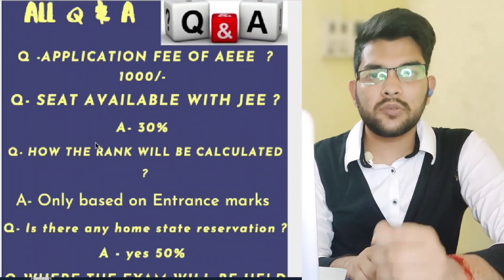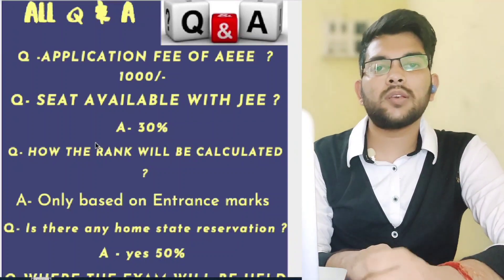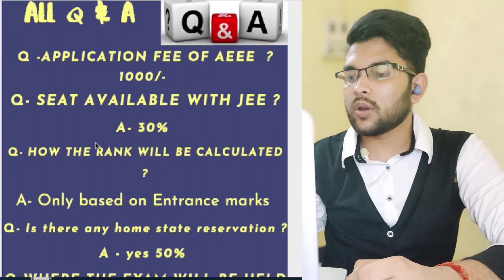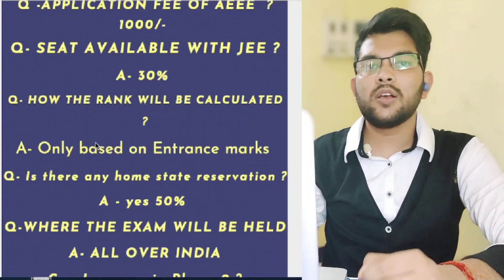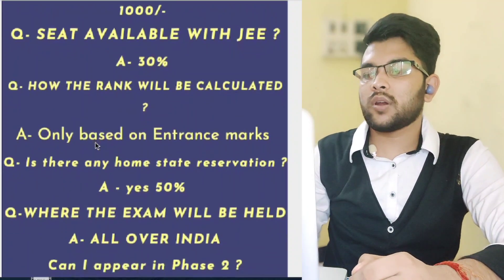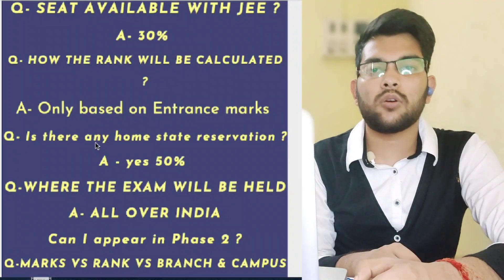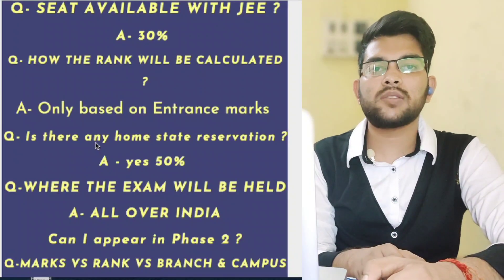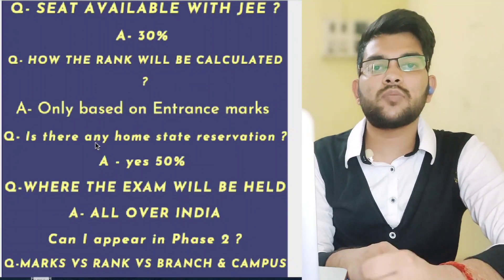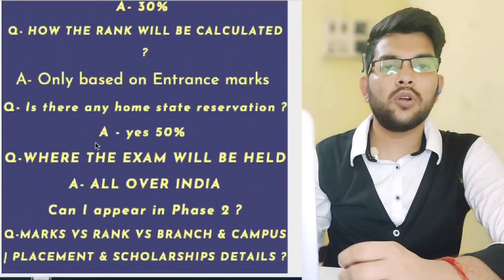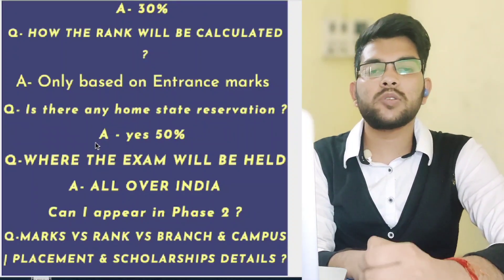For Amrita Puri, Kerala students will get 50% reservation. So if you are from the home state, you will get admission at very low marks compared to other state students. I will provide all this information — home state and other state cutoffs for all branches and all campuses, placement records, and fee structure — in separate videos on this channel. Next, the exam takes place all over India as a center-based exam. You can appear in Phase 2 irrespective of whether you attempted Phase 1. I advise you to appear in both phases so your best score is considered for ranking.